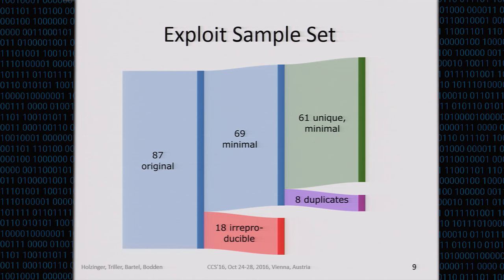We had 87 exploits as the basis. 18 of those we were not able to reproduce, so we threw them away — some were likely incomplete. The remaining 69 exploits are what we call minimal exploits, meaning just the crucial code required to actually perform the attack. We reviewed these 69 minimal exploits to ensure uniqueness, and found that 8 were actually duplicates. This finally left us with 61 unique minimal exploits in our sample set, which we used for all follow-up analysis.